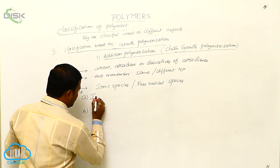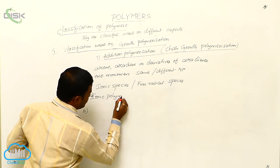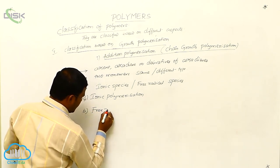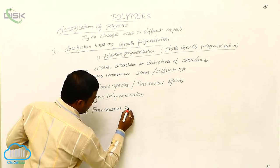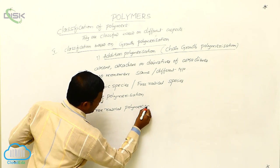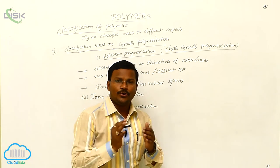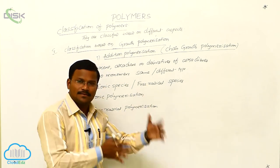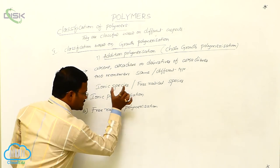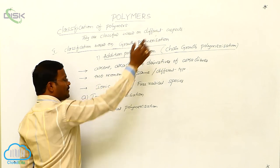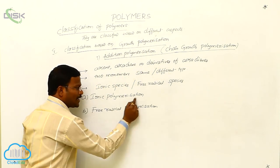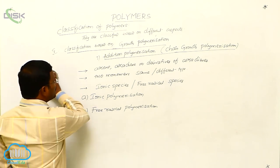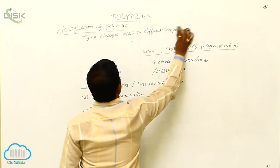The two categories of addition polymerization are ionic polymerization and free radical polymerization. During the addition reaction, when monomers react, either ionic species or free radical species form as intermediates. Based on which type of intermediate is formed, chain growth polymerization is classified into ionic polymerization and free radical polymerization.